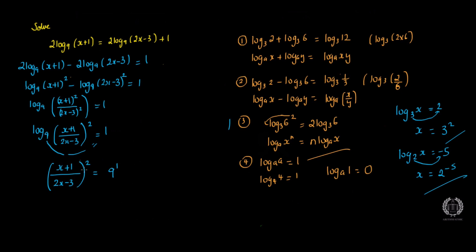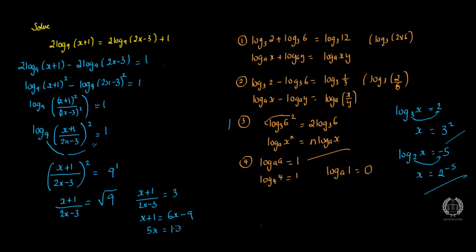To get rid of the square, take the square root of both sides: (x+1)/(2x−3) = 3. Cross-multiplying: x+1 = 3(2x−3) = 6x − 9. Bringing all x terms to one side: 1+9 = 6x−x, so 10 = 5x, giving x = 2.